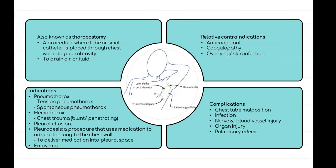Chest tube is also used in pleurodesis to deliver medication into the pleural space. Pleurodesis is a procedure that uses medication to adhere the lung to the chest wall to prevent recurrent pleural effusion or pneumothorax, or to treat a persistent pneumothorax. The last indication is empyema, which requires chest tube insertion along with antibiotic prescription.